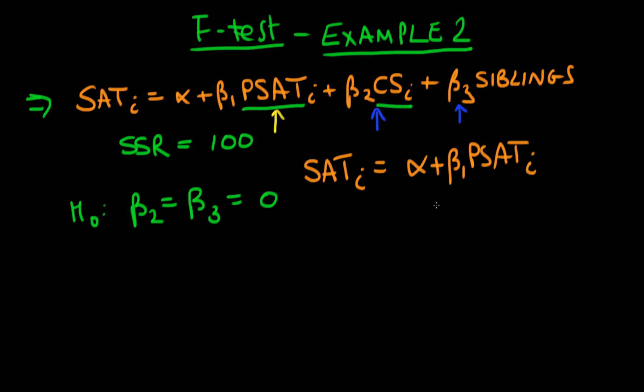Okay, so perhaps we run the second regression and the sum of square residuals is slightly higher, so it goes up to 120. And let's say that we had a sample size of 30 individuals. Okay, so how can we go about testing whether these two variables are in fact significant?